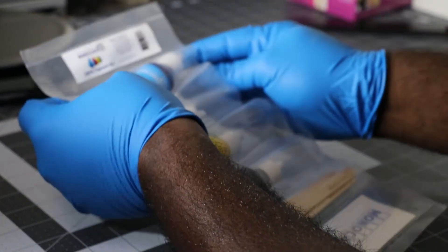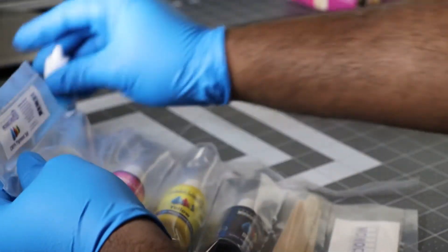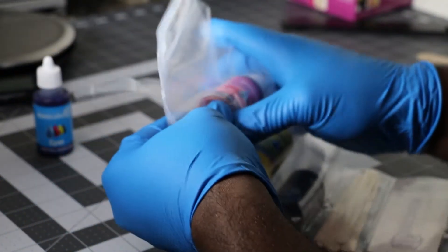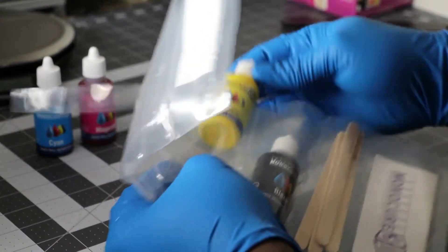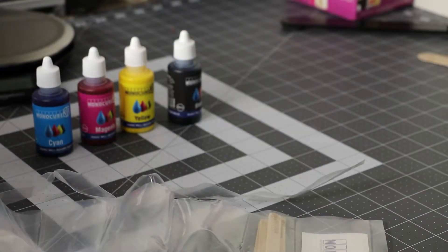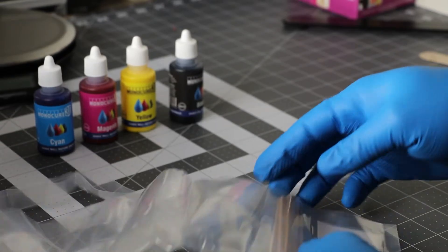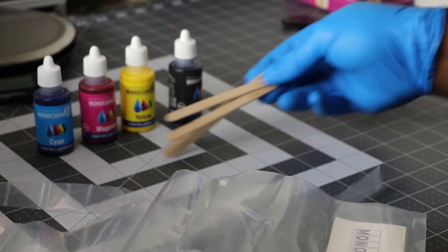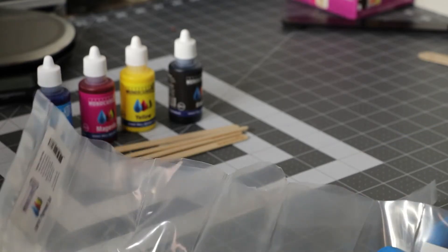It's in CMYK, same as an inkjet printer, so you've got the same four colors: cyan, magenta, yellow, and black, which is the same colors that your printer uses to make colors when you print out on a piece of paper. The kit also comes with a set of mixing sticks and a sticker.